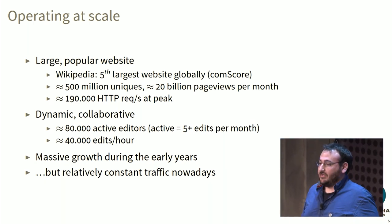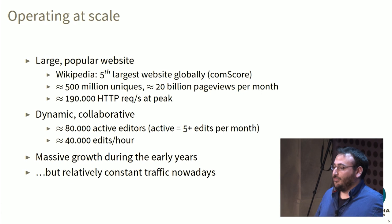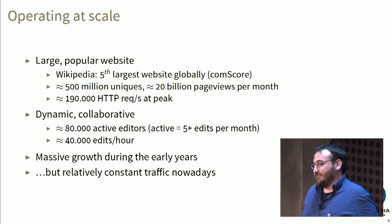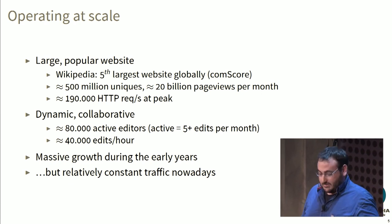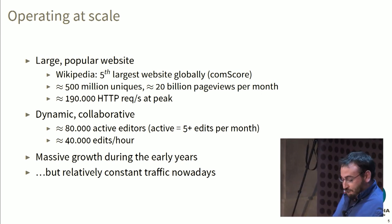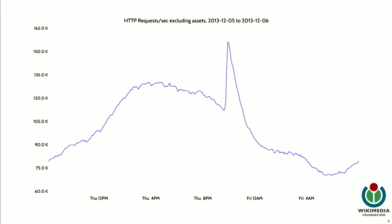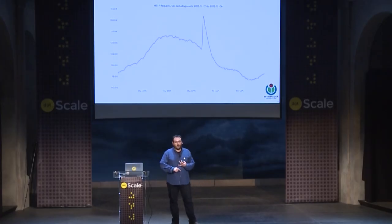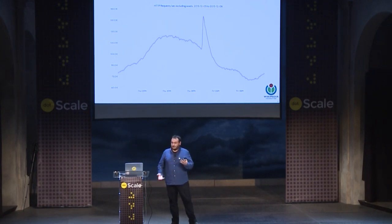Initially, Wikipedia was massive in growth — it started doubling every few months. Nowadays it's fairly static, which is good for us, but it's still not completely predictable. This is a graph from December. The large spike you see there — that's a 35% spike — is Nelson Mandela's death, which happens from time to time. There have been a few other incidents like that: the new Pope (two times now), Michael Jackson's death, and so on.